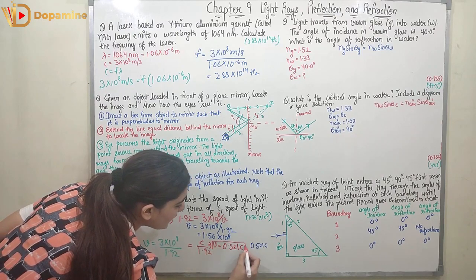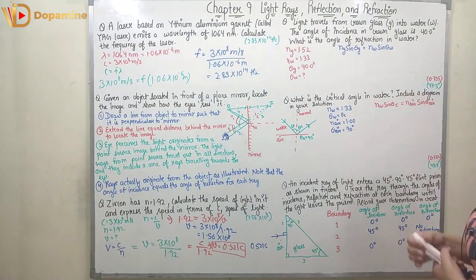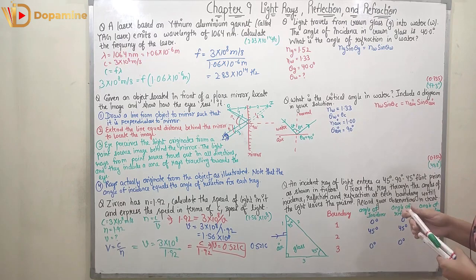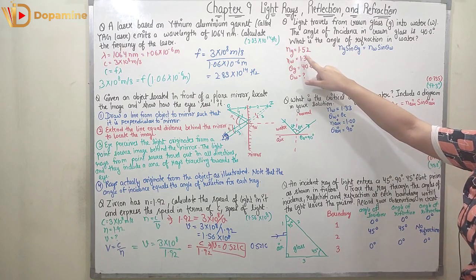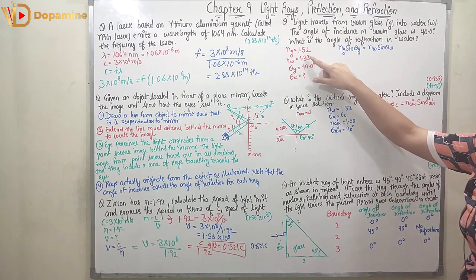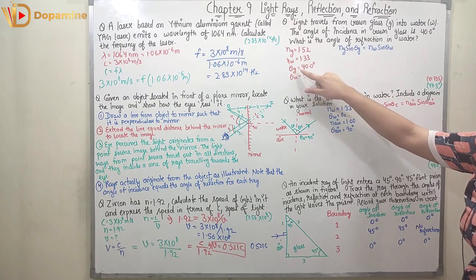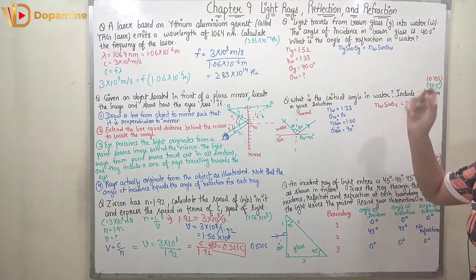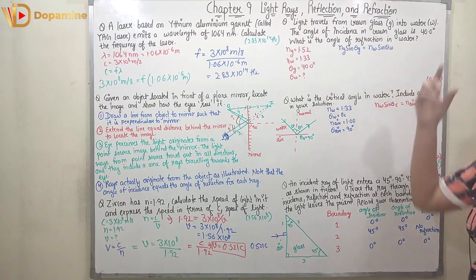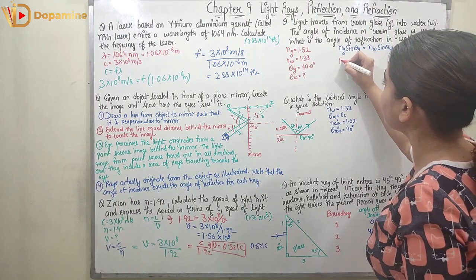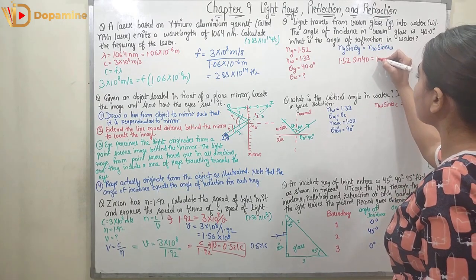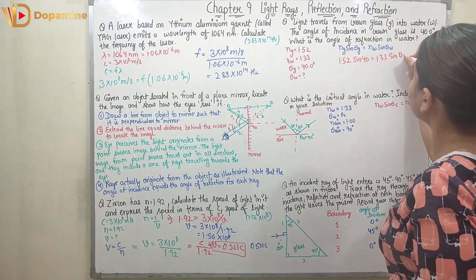Coming to the next question: light travels from crown glass into water. The angle of incidence in crown glass is 40°. What is the angle of refraction in water? The refractive index of glass is 1.52 and of water is 1.33. Using Snell's law: n_g × sin θ_g = n_w × sin θ_w. So 1.52 × sin 40° = 1.33 × sin θ_w.